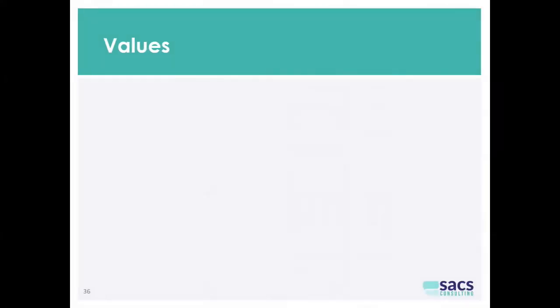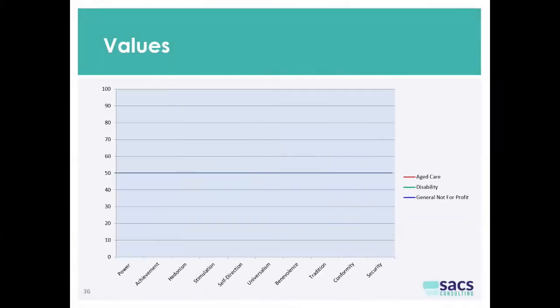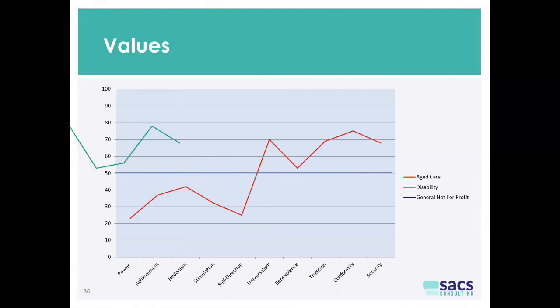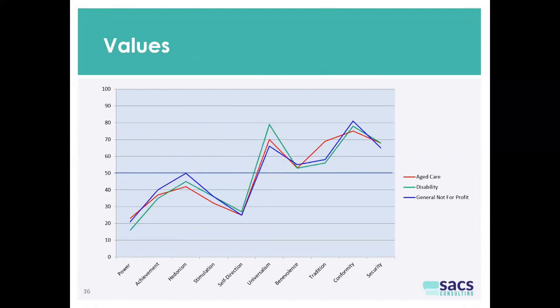Now let's look at values. We see the three sectors mentioned earlier — the aged care sector, the disability sector, and the general not-for-profit sector — and once more we have the 50 line giving us population average. So firstly, aged care, disability, and the general not-for-profit sector.